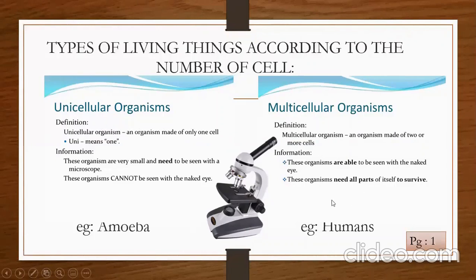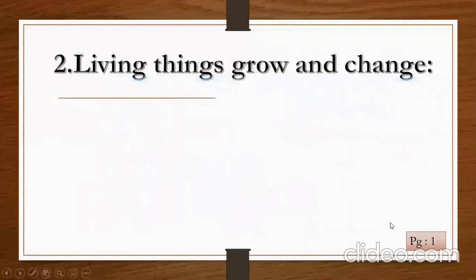If we talk about examples of multicellular organisms, human beings are there, and all the living things which you can see around you — they all are multicellular organisms. Number two feature is: living things grow and change.